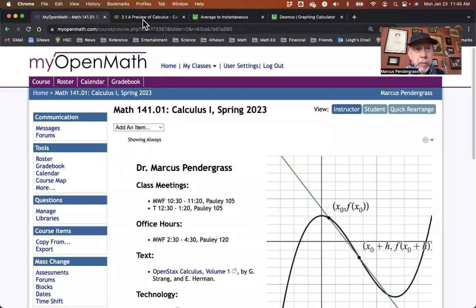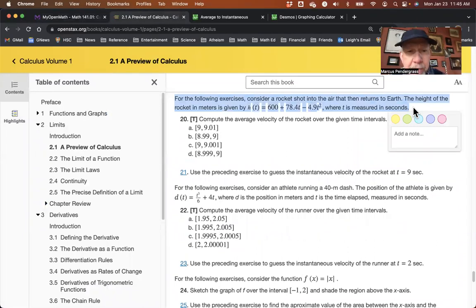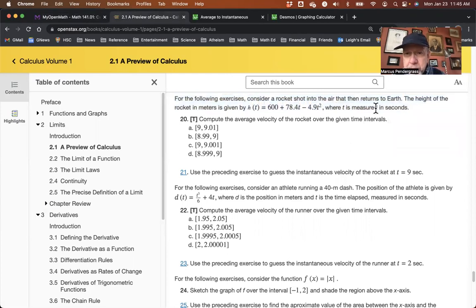So let's see how that might work with respect to a problem, and I'm just going to use a problem in the book here. Consider a rocket shot in the air that returns to Earth. The height of the rocket in meters is given by this formula, where t is measured in seconds. So this would be the time, t is the time in seconds after launch. And they want us to compute the average velocity over these given time intervals. One thing that I would want to point out here is that all those time intervals are focused near t equals nine seconds. And we're going to see that that's actually an important idea along the way towards the concept of instantaneous rate of change.